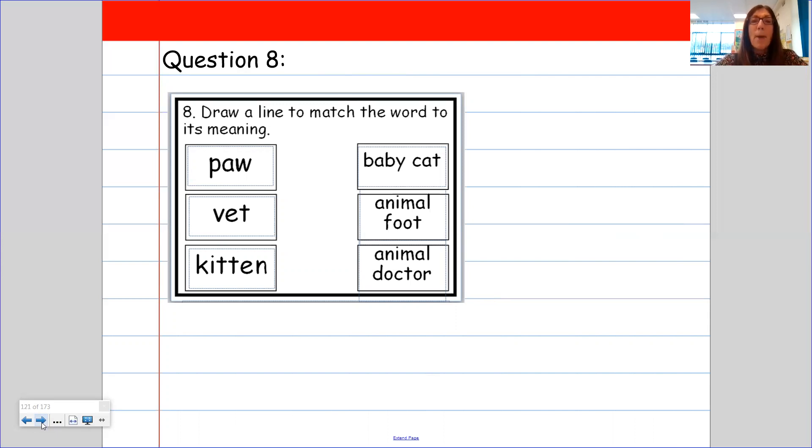A vet. Is it a baby cat, an animal foot or an animal doctor? Get ready to shout the answer out. One, two, three. Yes, a vet is an animal doctor. And the last one is a kitten. Again, if you want to whisper to yourself what the answer is. Brilliant. It is a baby cat.